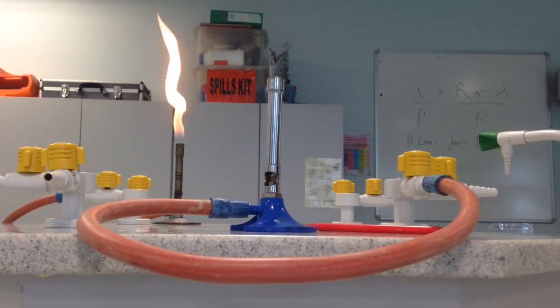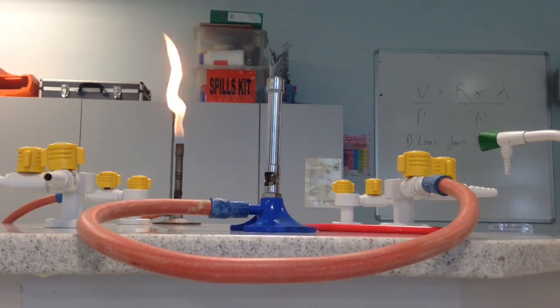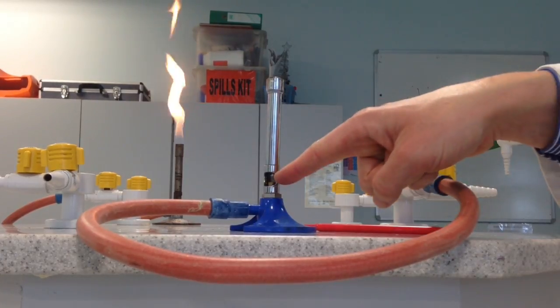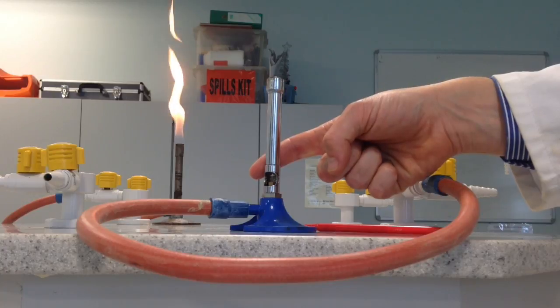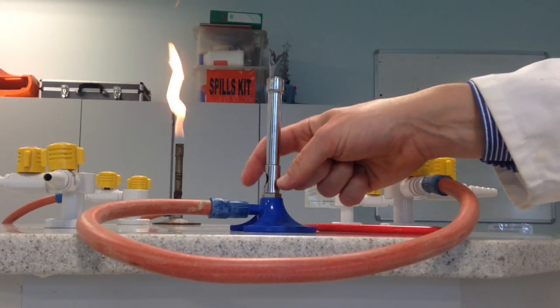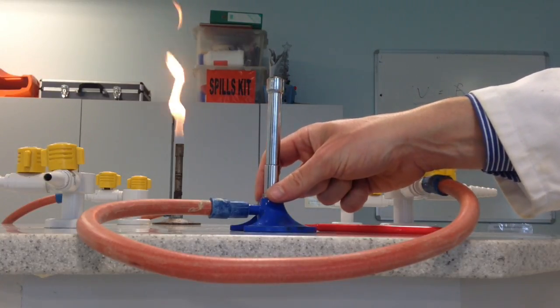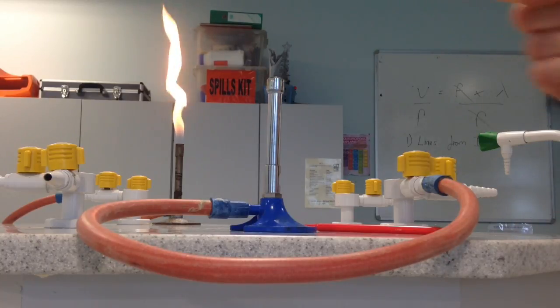Step one when you are lighting a Bunsen burner, and this is the step that everybody gets wrong, so don't you be one of those everybodys, is the air hole must be closed. Think ABC: Always Be Closed. When you're lighting the Bunsen burner, always close the air hole.